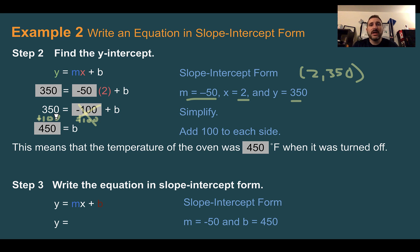Now my last step, write in slope-intercept form. So now I know that my slope is negative 50 and my y-intercept was 450. I can just plug those in. My final equation would be y equals negative 50x plus 450.